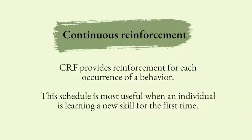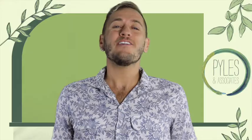First up, we'll discuss continuous reinforcement, or CRF. CRF provides reinforcement for each occurrence of a behavior. This schedule is most useful when teaching a new skill. One advantage of using a CRF schedule is that learning happens quickly. There are a couple of disadvantages as well. The first is that an individual may become satiated on that reinforcement because of how constantly we are providing reinforcement. Also, it can be very time-consuming to continuously run this type of schedule. CRF is really good at maintaining a behavior, but it's also easily subject to extinction.